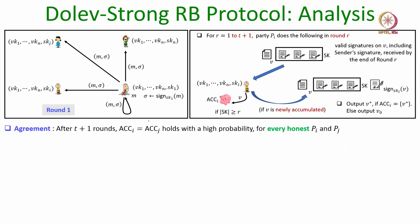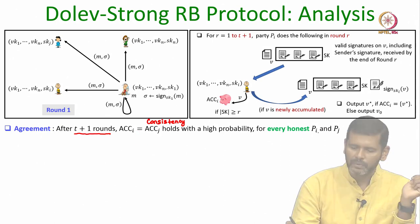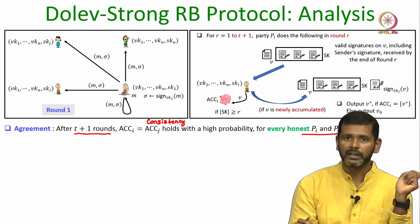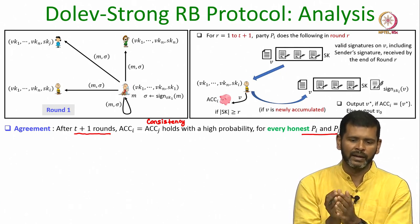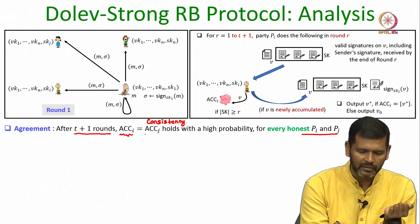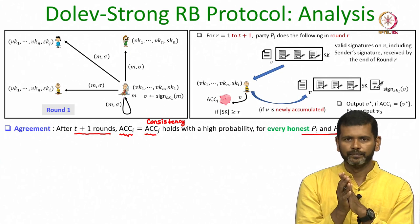Now to prove the consistency or agreement property: we want to show that at the end of t plus 1 rounds all honest parties have a common output, even if the sender is corrupt and has sent different signed messages to different honest parties during the first round. We will show that after t plus 1 rounds, for any pair of honest parties pi and pj, their respective accumulative sets act_i and act_j will be identical, which automatically implies they output the same value.